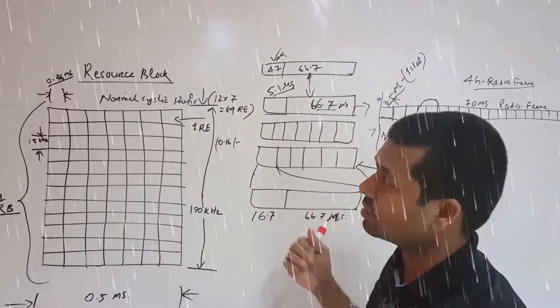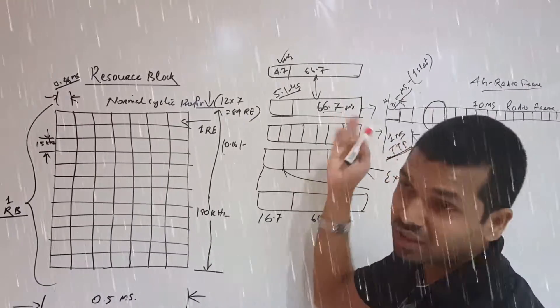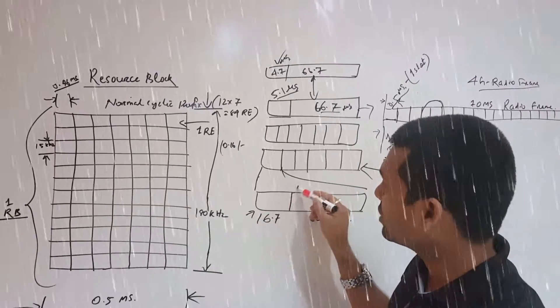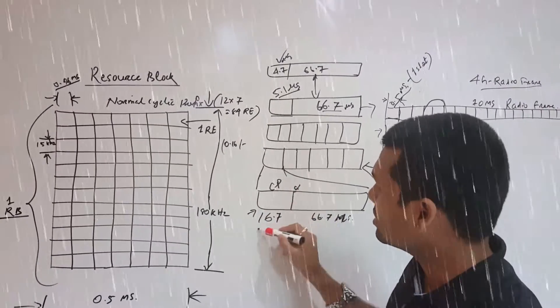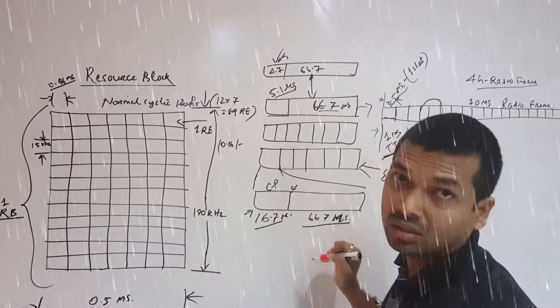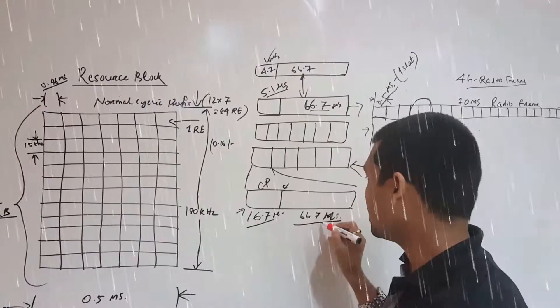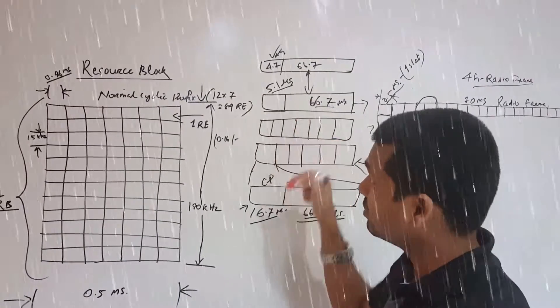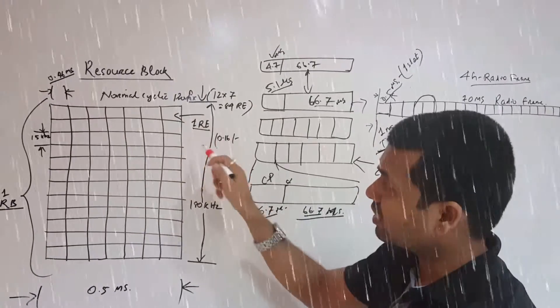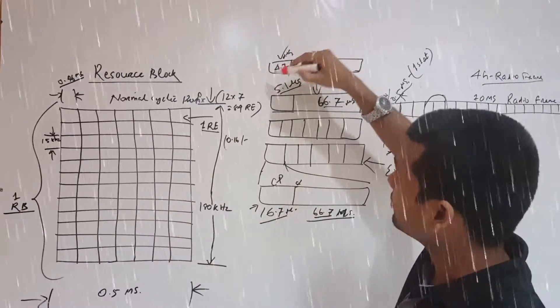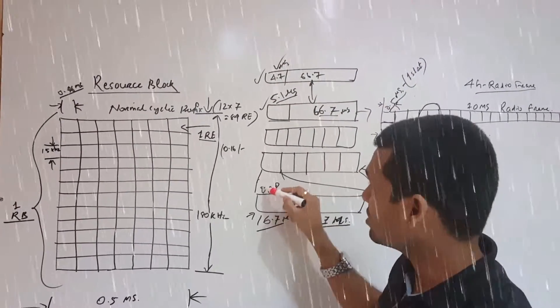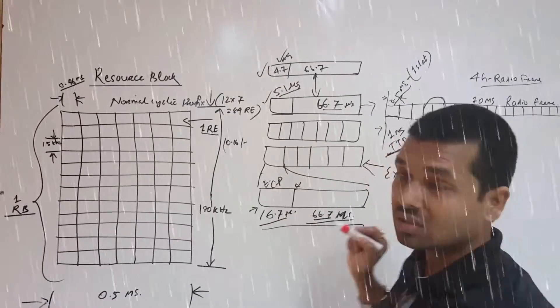But in extended case, the cyclic prefix is 16.7 microseconds. So this is the basic difference between resource elements: in case the normal cyclic prefix is used, this one, and if the extended cyclic prefix is used, then this is the structure.